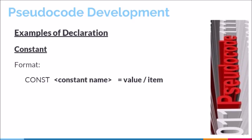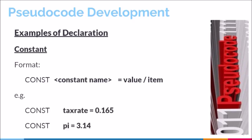Here we have two constants being declared. One constant is referred to as tax_rate and the other as pi. For these two constants, the values are not expected to change throughout the execution of the program being created.